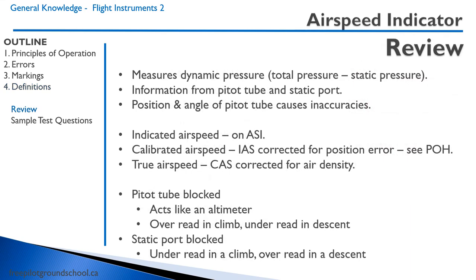Let's review the airspeed indicator. It measures dynamic pressure, which is the total pressure from the pitot tube minus the static pressure from the static port. It suffers from position and angle inaccuracies. Indicated airspeed is what's measured on the indicator; calibrated airspeed is indicated airspeed corrected for position error — look at the pilot operating handbook for the correction. True airspeed is the calibrated airspeed corrected for air density. If the pitot tube becomes blocked, the airspeed indicator acts like an altimeter — over-reading in a climb, under-reading in a descent. If the static port becomes blocked, it will under-read in a climb and over-read in a descent.